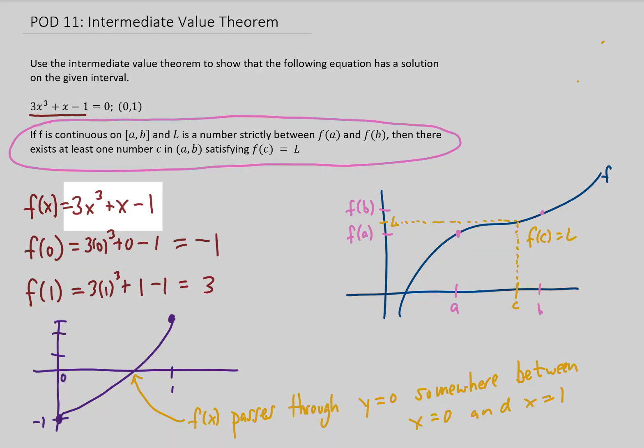Therefore, 3x³ + x - 1 must equal 0 somewhere between x = 0 and x = 1. And that is it for that problem. I hope that helps you out, and I'll see you in the next problem of the day.